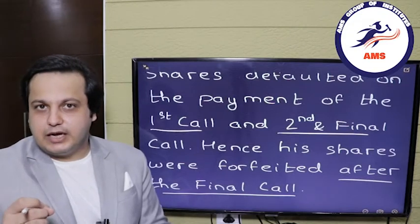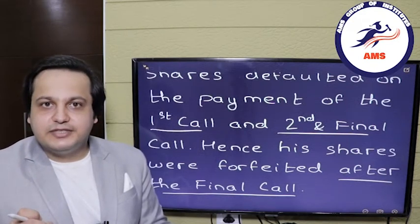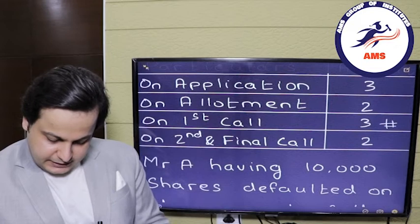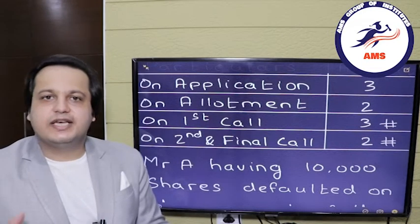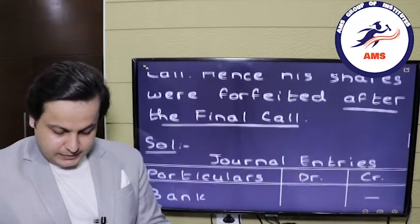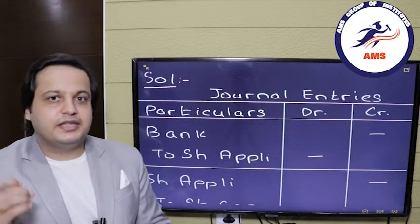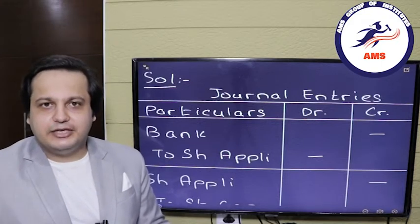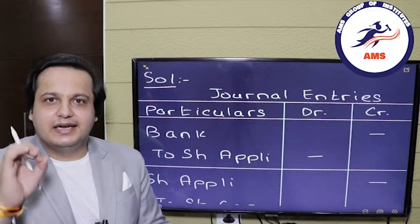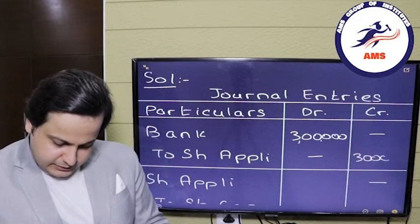Before we move to the accounting, there is one step I always tell my students to follow — mark all those places where there is an adjustment. In our case there are adjustments in the first call and the second and final call. I am using a hashtag; you can use whatever distinct mark you want. Now let's move forward with the journal entries. First we will pass the journal entry for receiving the applications: bank account debit to share application, the amount being 1 lakh shares × ₹3 = ₹3 lakhs.